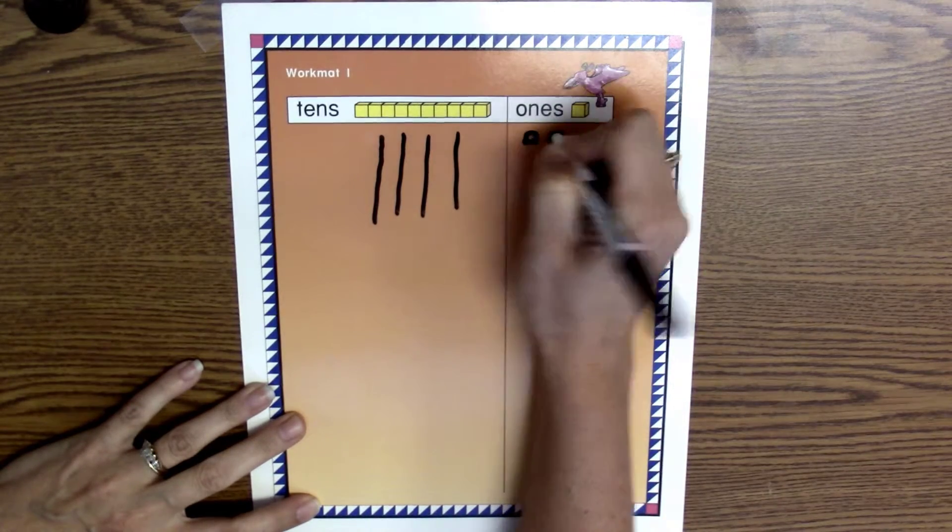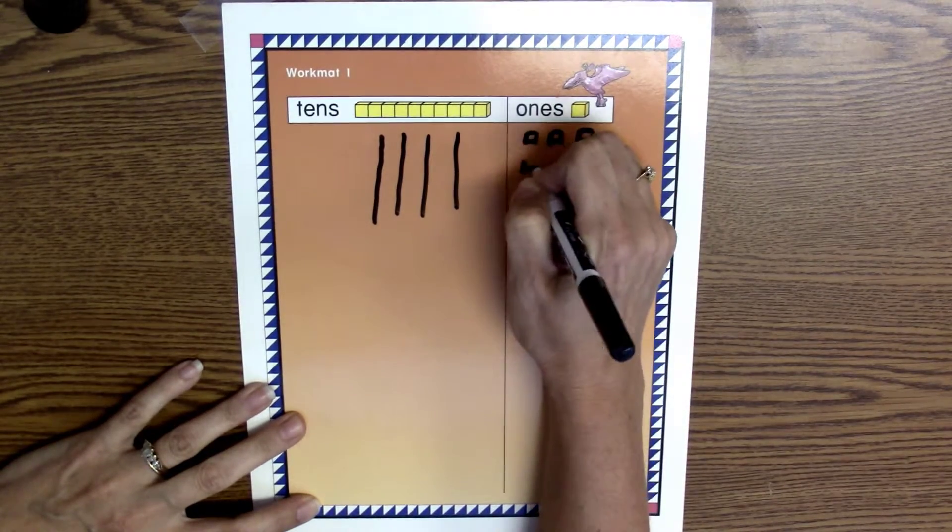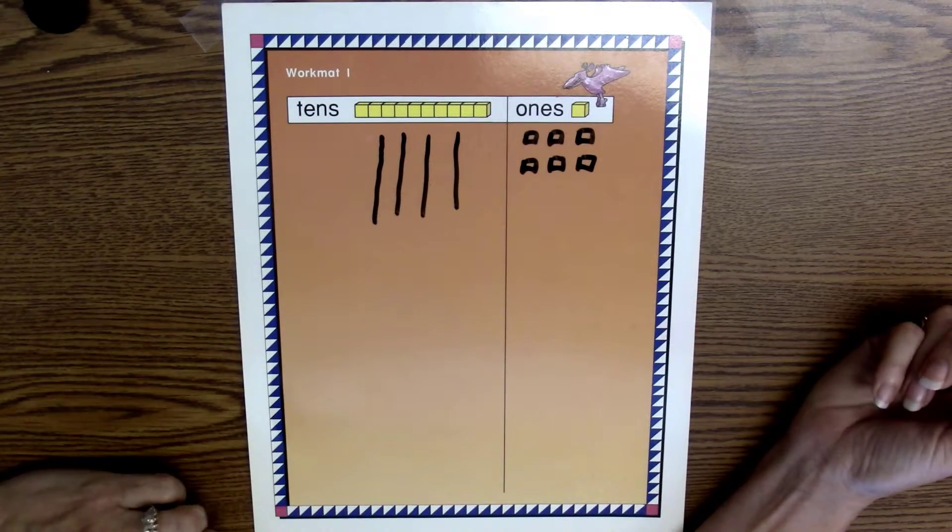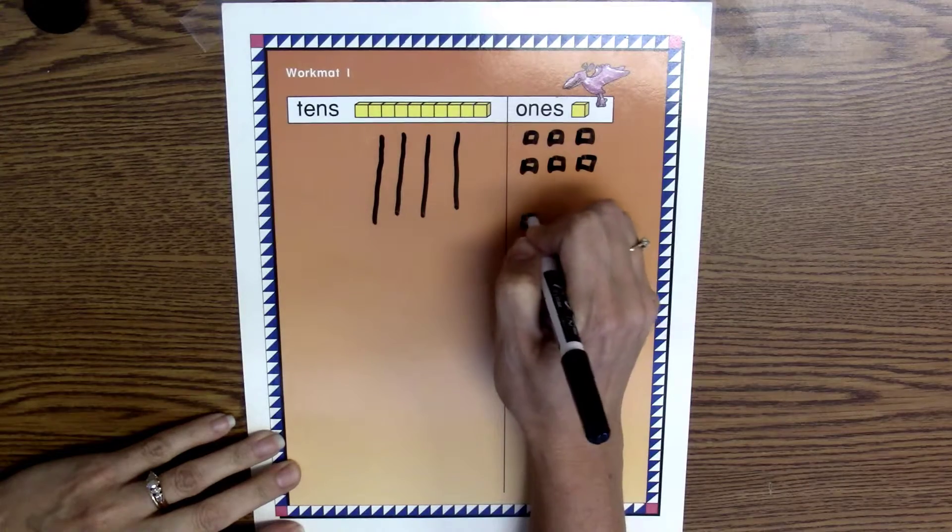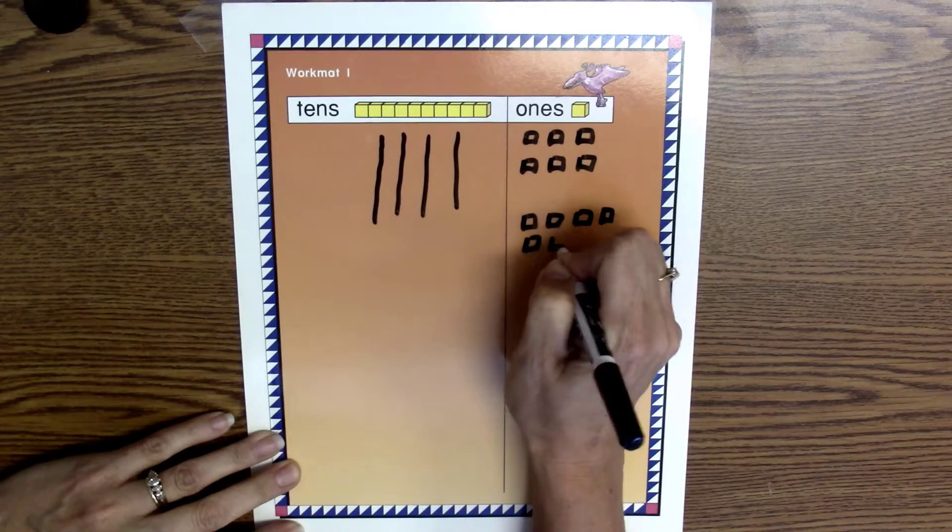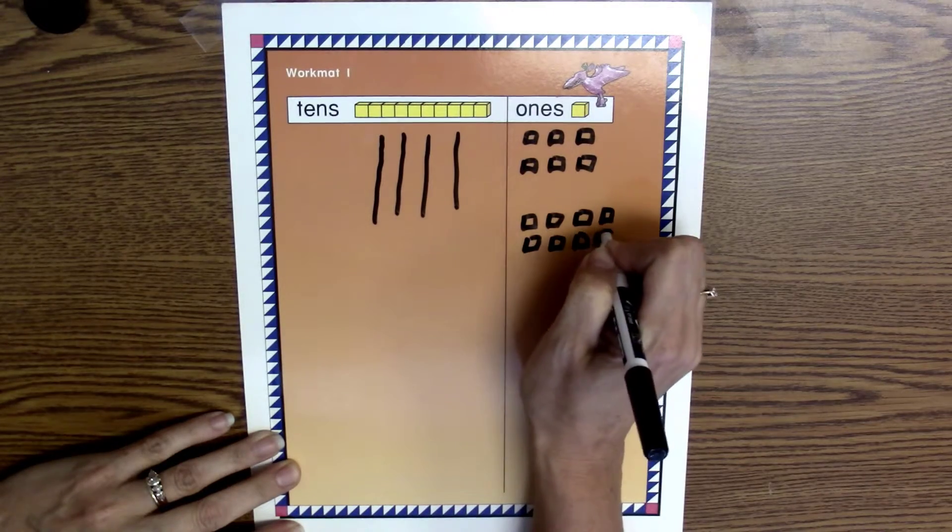1, 2, 3, 4, 5, 6. And then I'm going to add 8 more ones: 1, 2, 3, 4, 5, 6, 7, 8.